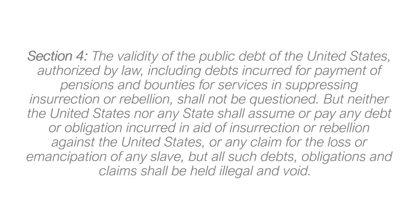Section 4 of the 14th Amendment says the validity of the public debt of the United States authorized by law, including debts incurred for payment of pensions and bounties for services in suppressing insurrection or rebellion, shall not be questioned. But neither the United States nor any state shall assume or pay any debt or obligation incurred in aid of insurrection or rebellion against the United States, or any claim for the loss or emancipation of any slave — all such debts, obligations and claims shall be held illegal and void. Section 5 says Congress shall have power to enforce by appropriate legislation the provisions of this article.